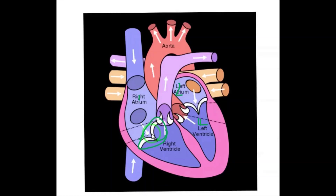The second valve is the bicuspid valve, also known as the mitral valve. It has two names: bicuspid or mitral valve. This valve is located between the left auricle and the left ventricle.